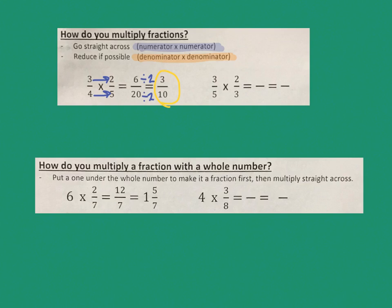The next one says 3 fifths times 2 thirds. Again, I should simply go straight across in both directions. On the top, 3 times 2 is 6, and 3 times 5 is 15. 6 and 15 are not both even; however, they can both be simplified because they can be divided by 3. So I'm going to divide both the top and the bottom by 3, and then my final answer would be 2 over 5.